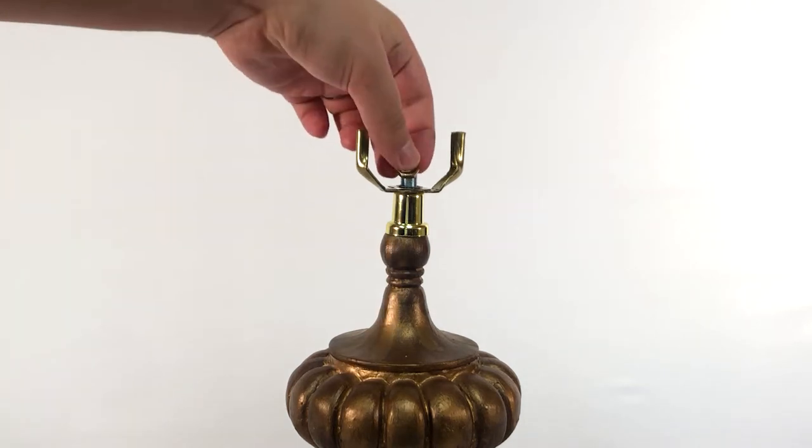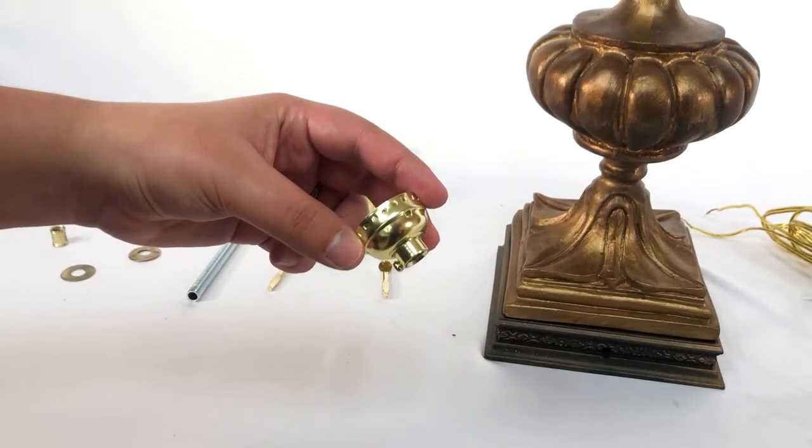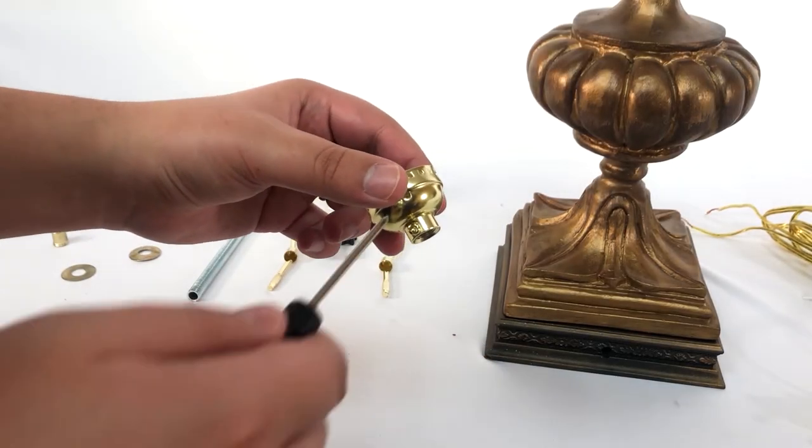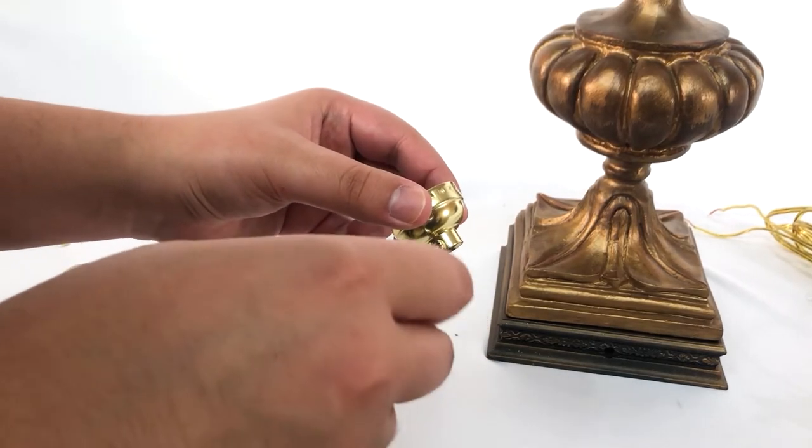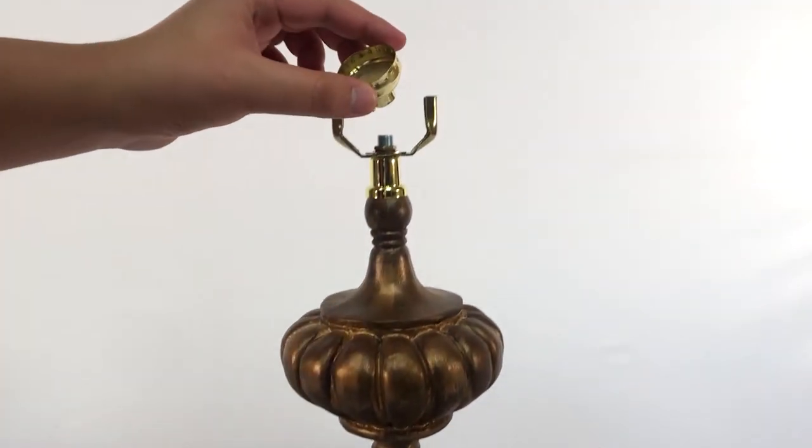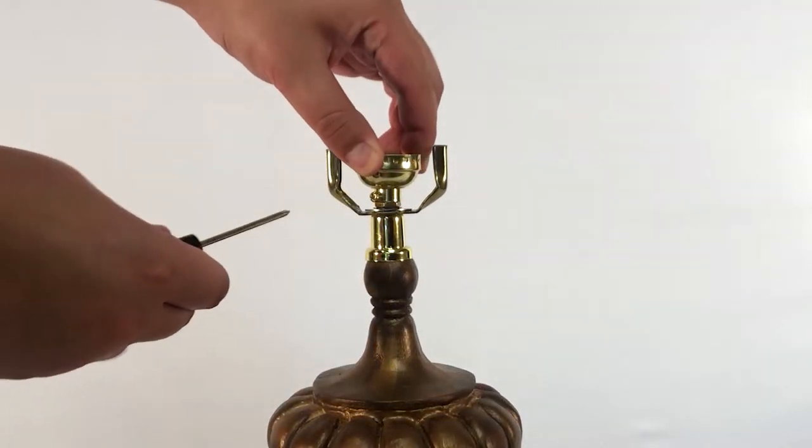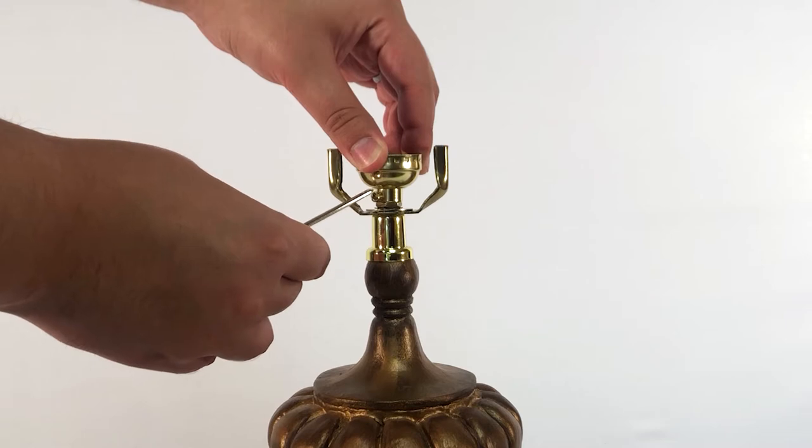If needed, use a wrench or pair of pliers to tighten it. Loosen the screw on the socket shell base, then screw the shell base onto the pipe. Retighten the small screw to secure the socket shell base.